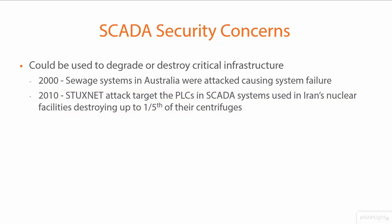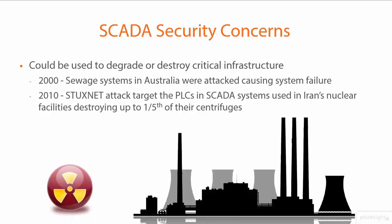Stuxnet was introduced via USB drives plugged into the air-gapped system. Once inside, it spread, identified the specific PLCs it needed to attack, and was able to destroy up to a fifth of the centrifuges in that nuclear facility by causing them to spin out of control. The scary part: the malware reported back to the HMIs that everything was fine, so operators had no idea until it was too late and the centrifuges burned out. SCADA systems have great utility but also a huge potential for impact if breached, as we rely on them for critical infrastructure across all facets of society.